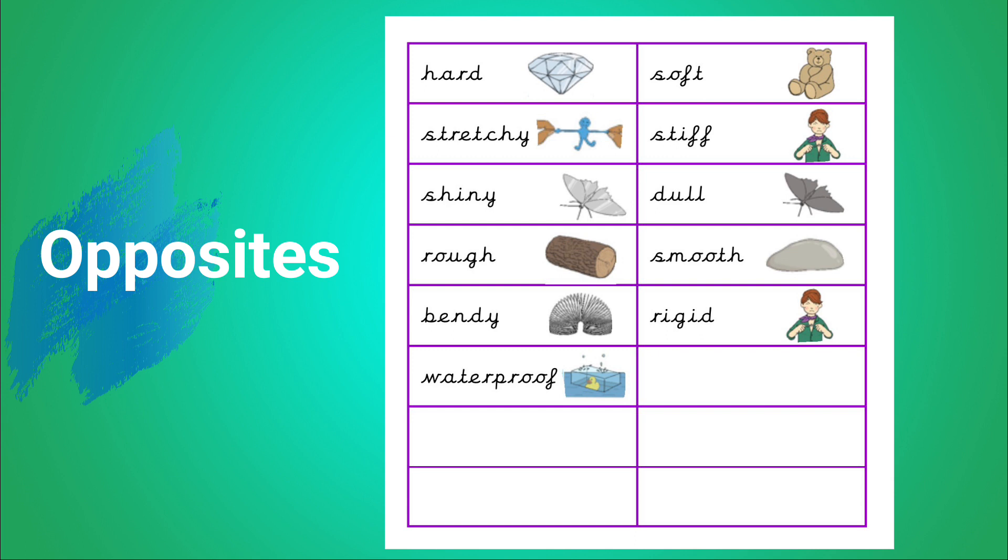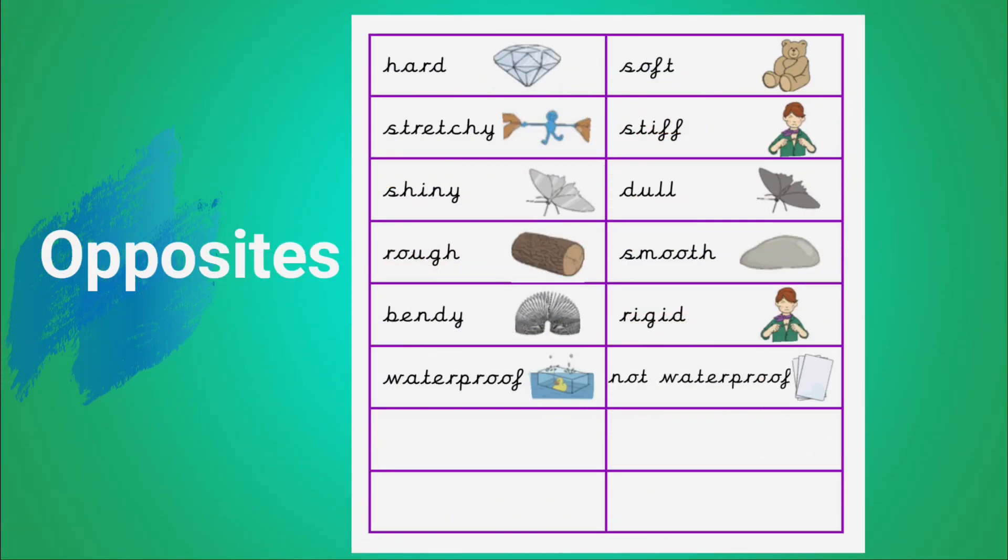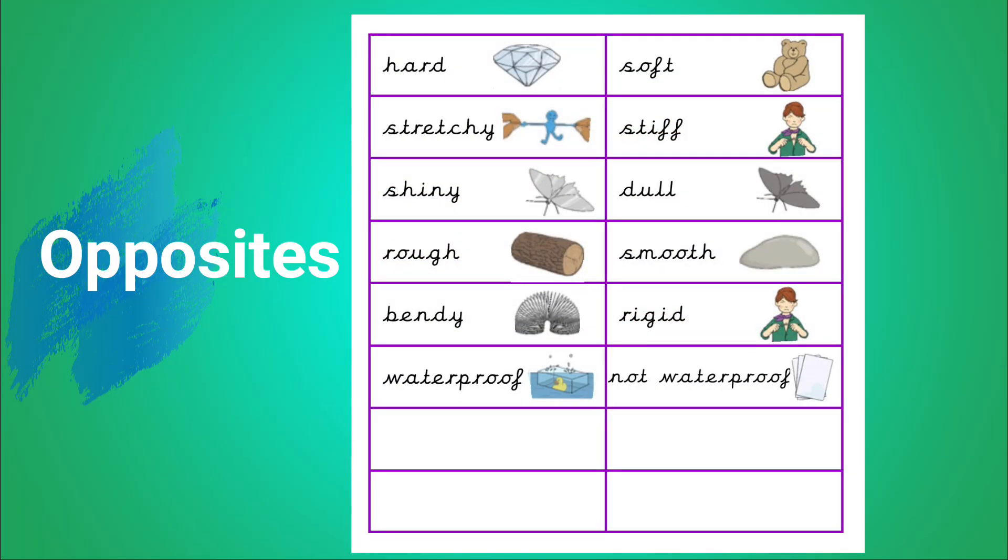Waterproof. Like an umbrella. The opposite of waterproof is not waterproof. Like some paper.